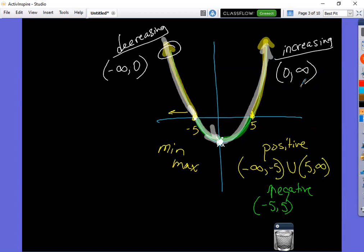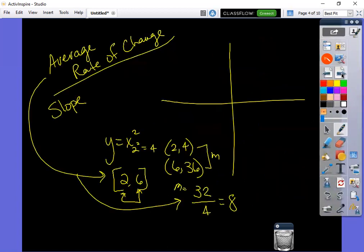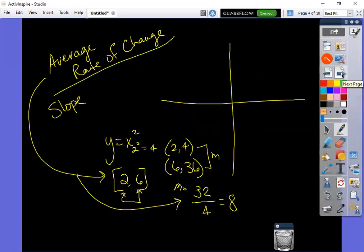So then after you get your increasing, decreasing, your zeros, your min and your max, your positive, your negative parts of the graph, I think we have just one last concept from 1-1 that you would need. And that is, what's the average rate of change. So average rate of change is just another way of saying slope.